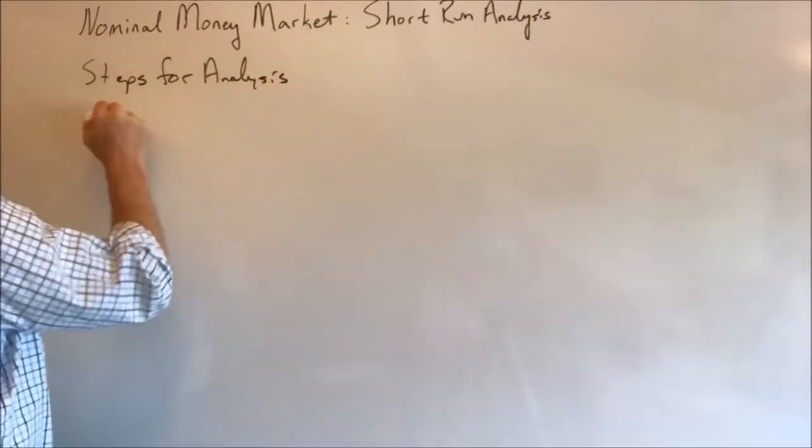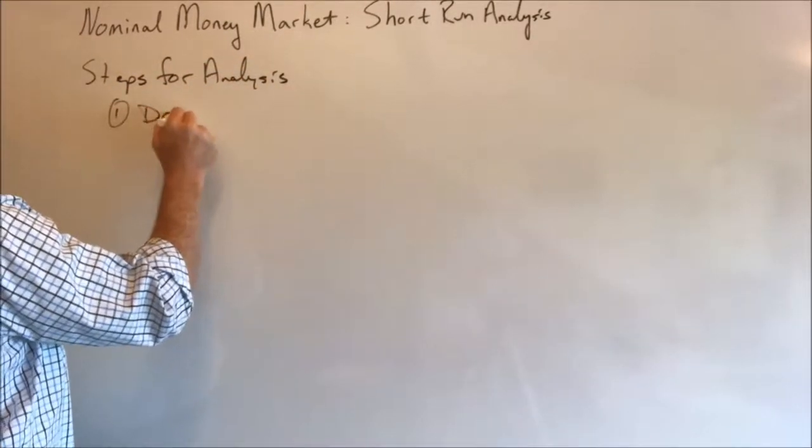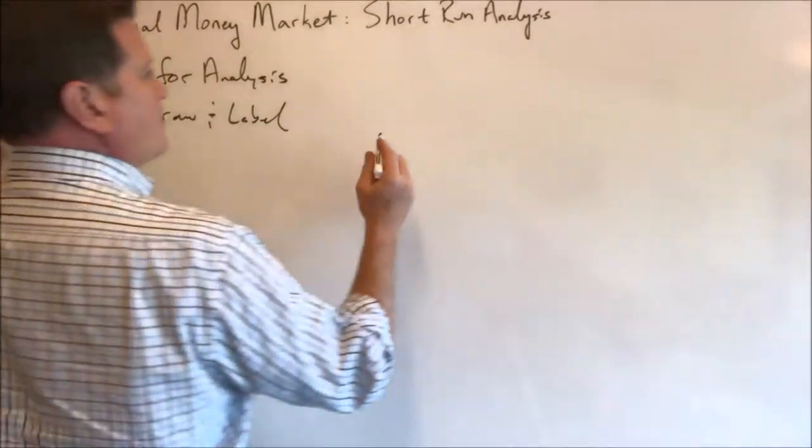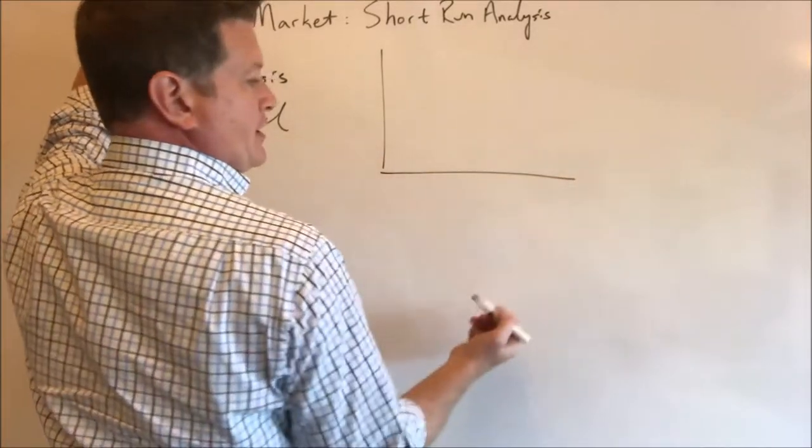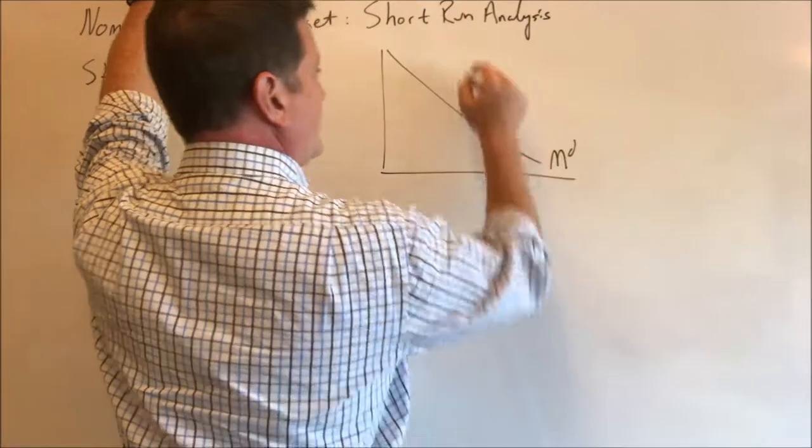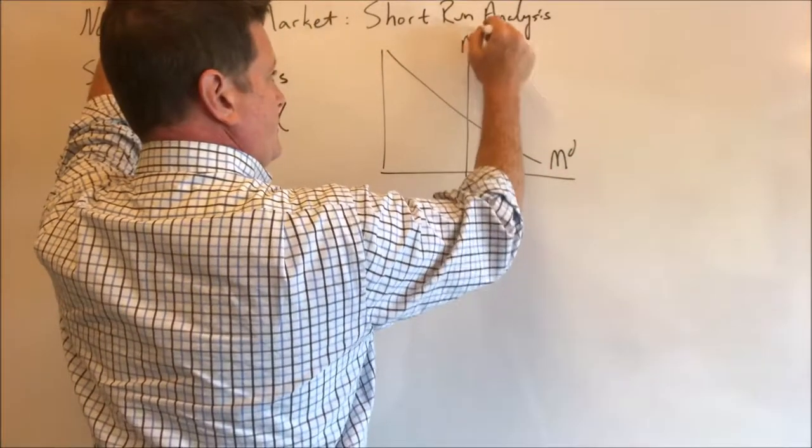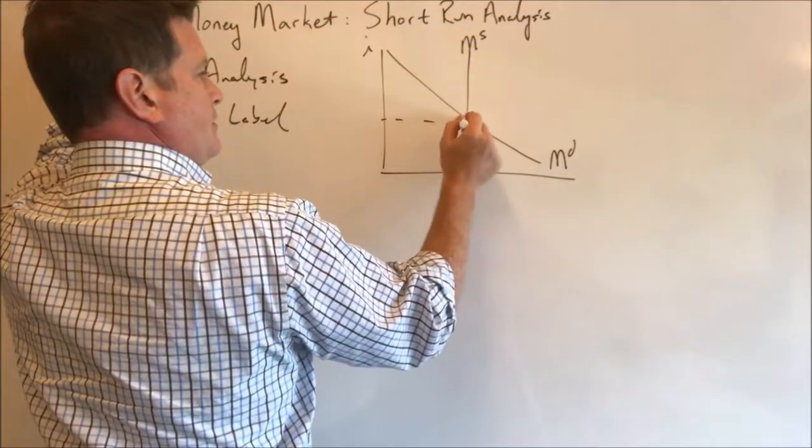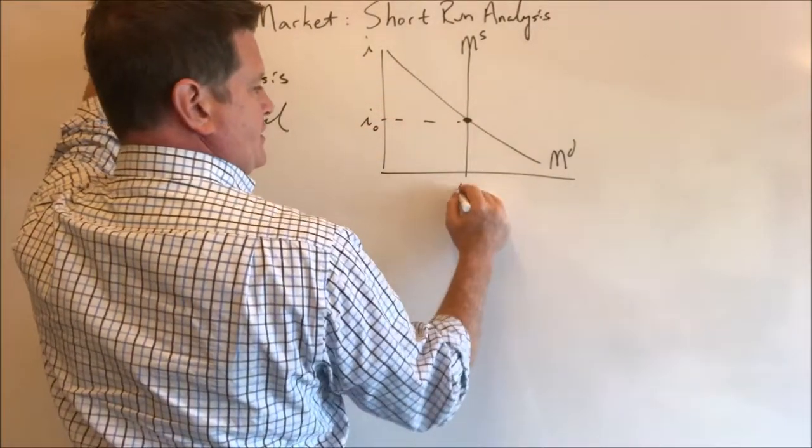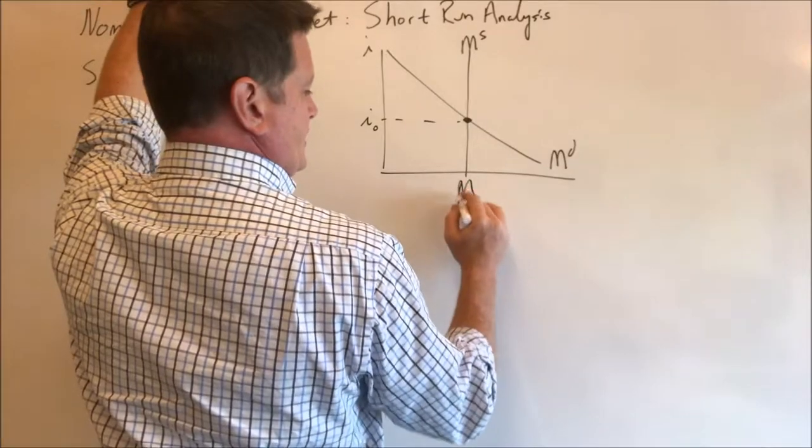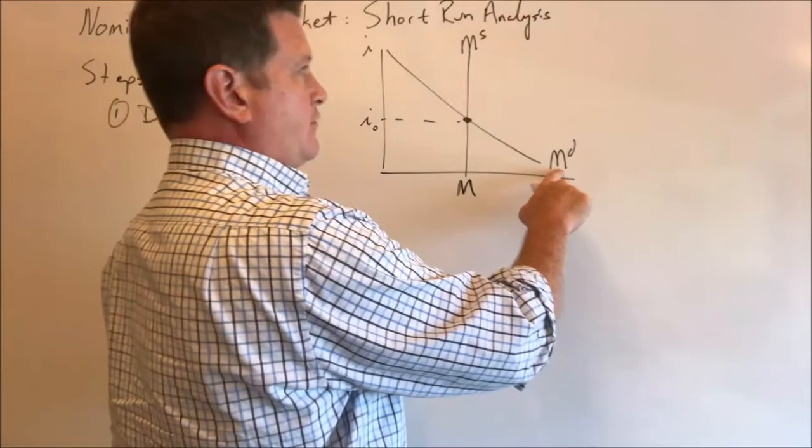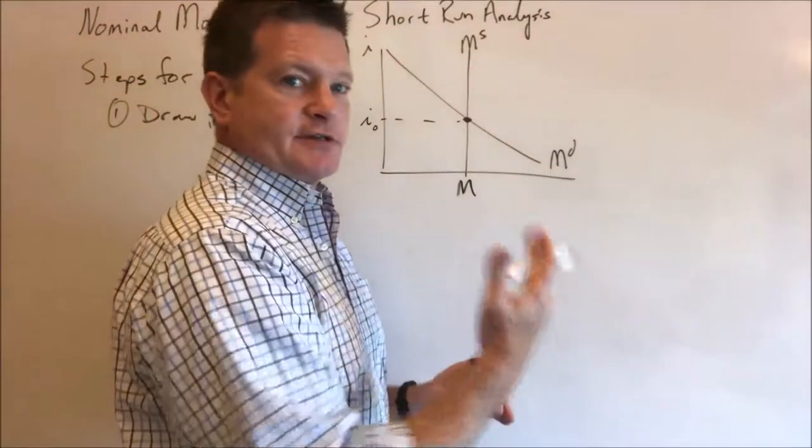Are first to draw and label whatever diagram or market you're analyzing. So for us, we're looking at the money market. It has a demand curve and a supply curve in equilibrium. This market determines the nominal interest rate and the quantity of money in the economy. Now we have money demand over here.